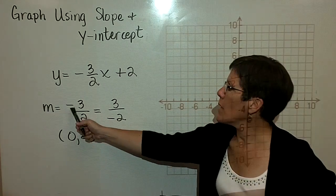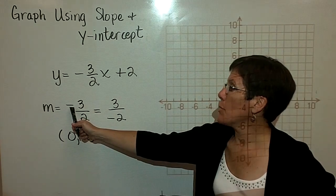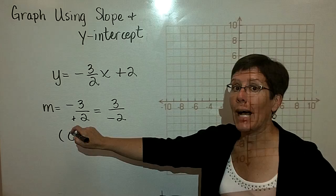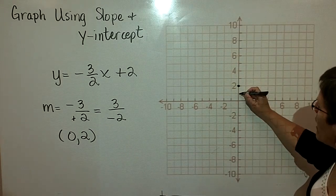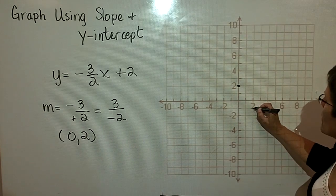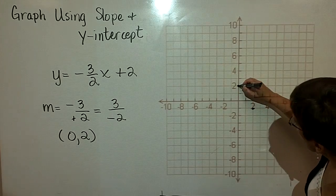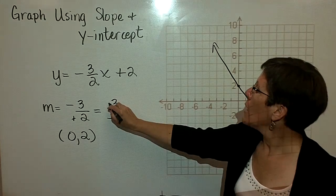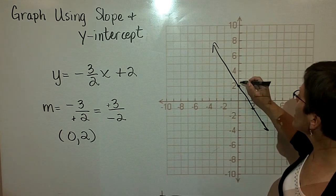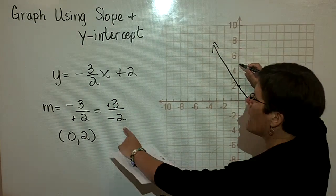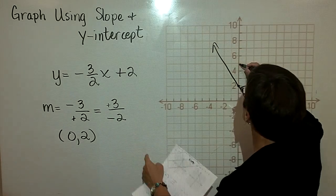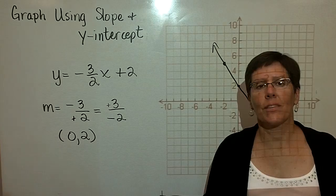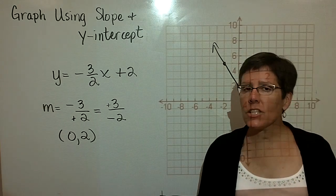So I'm going to go ahead and plot the y-intercept. And then I'm going to first use this. So in the y direction, I'm going to go down 3, and in the x direction, I'm going to go to the right, a positive 2. So down 3, and to the right, a positive 2. And connect the dots. Had I chosen to go in the y direction from here, a positive 3, and then in the x direction to the left 1, 2, I'd have been right there and gotten the graph of the same line.